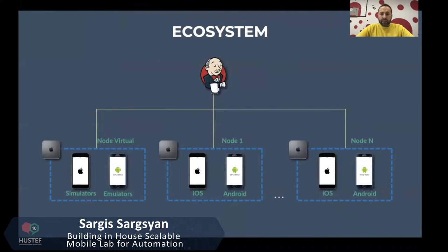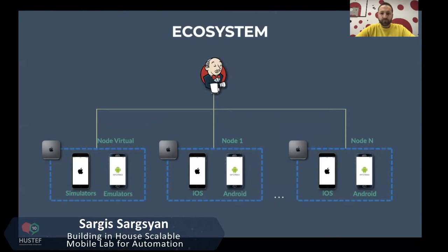The overall ecosystem looks like this: we have Jenkins with connected nodes. We use one machine as a virtual node, running automation tests on simulators and emulators only. Then we have several physical nodes — each node has a connected iPhone and Android device. The infrastructure is built with scaling in mind: when we want to scale, we just connect another machine as a node, and within 10–15 minutes we can set everything up to have one more extra node.